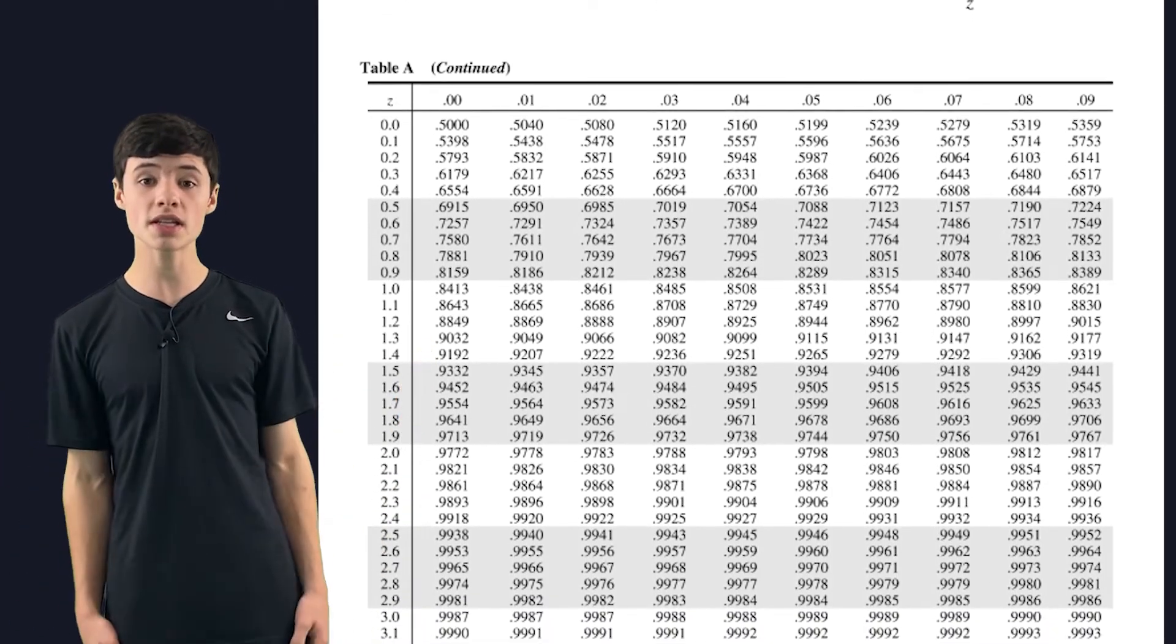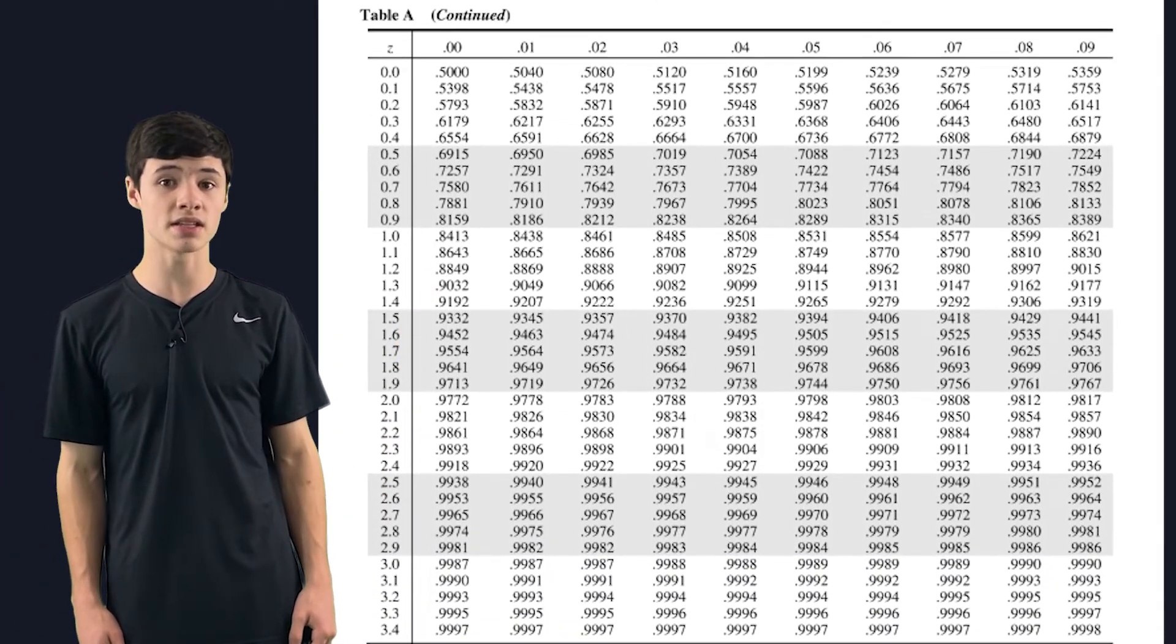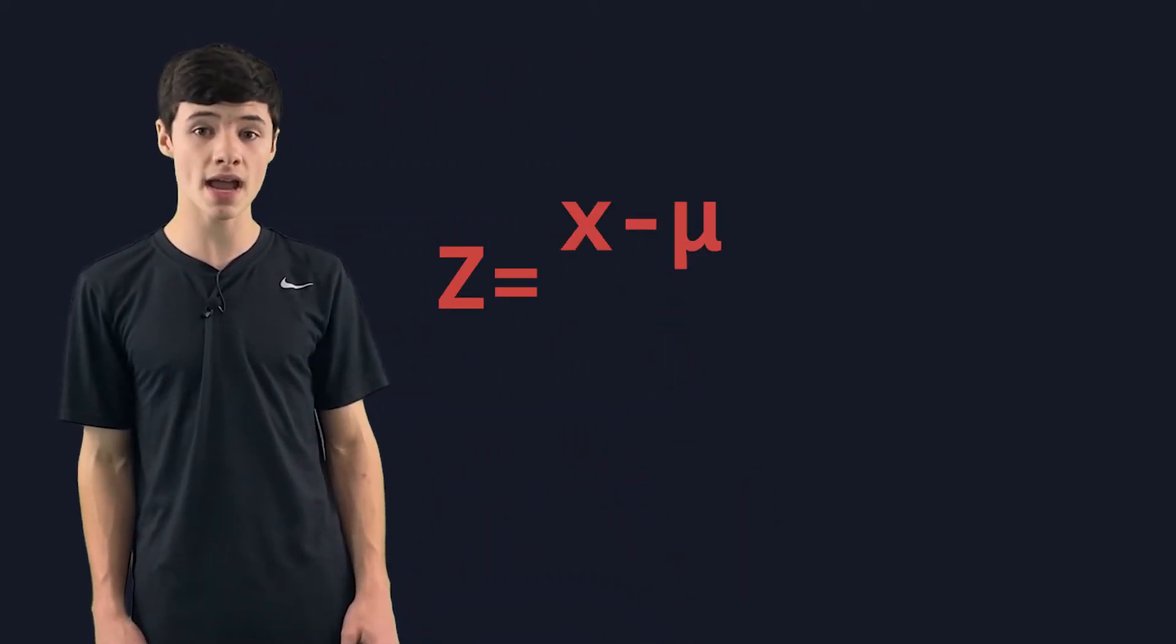But luckily for us, we get to do something called standardizing to get a z-score. And all a z-score is is the number of standard deviations that a value is from our mean. And the formula for a z-score is z equals x minus mu over sigma. Okay, so with that additional knowledge, let's jump into the code.